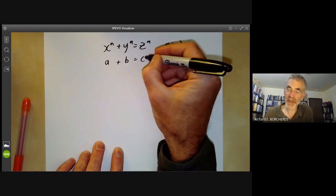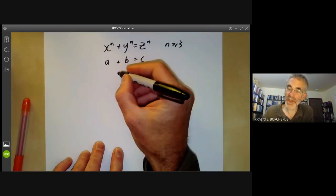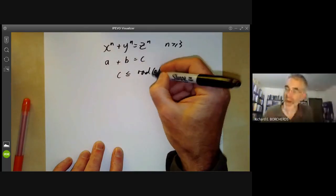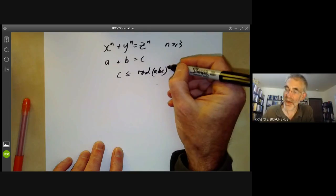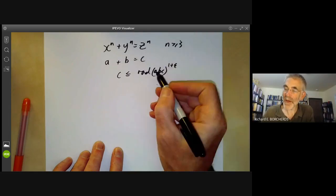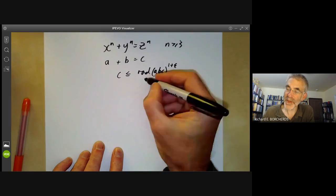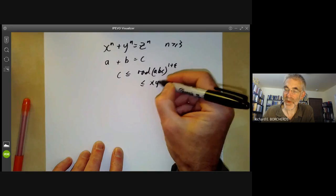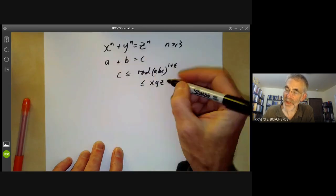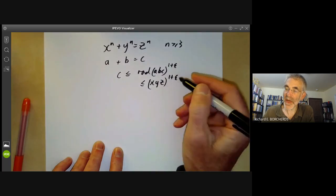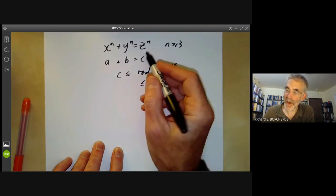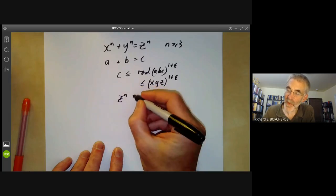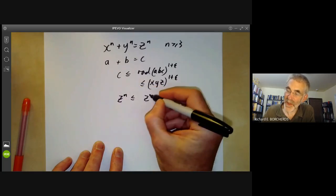and C is z to the n then the ABC conjecture would say that C is less than or equal to the radical of ABC to the 1 plus epsilon. Now the radical of ABC is going to be at most x, y, z. Here we're taking x, y and z to be co-prime to the 1 plus epsilon. So C is bigger than x and y so we find that z to the n would be less than or equal to z cubed to the 1 plus epsilon.